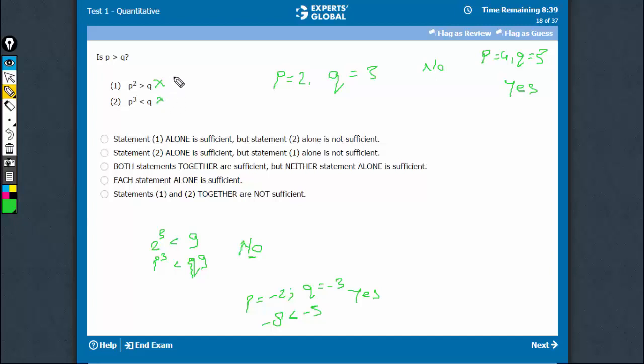On combining, in this case P = -2, Q = -3, so it's satisfying both conditions. P = -2, so (-2)² would be 4, which is greater than Q, which is -3. So you get yes as an answer, satisfying both conditions.